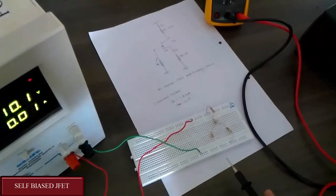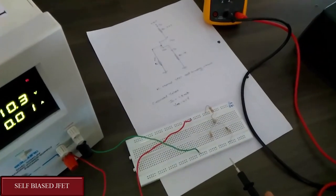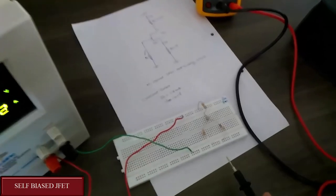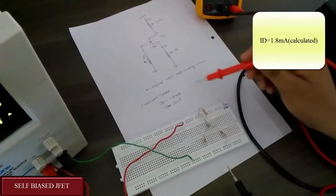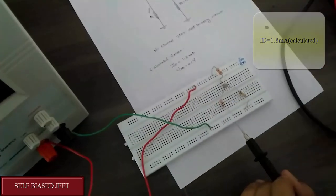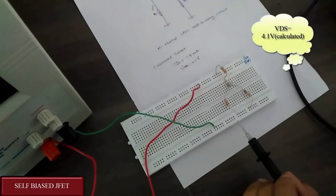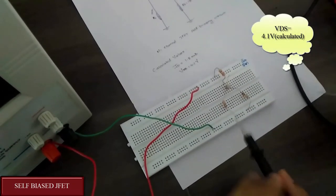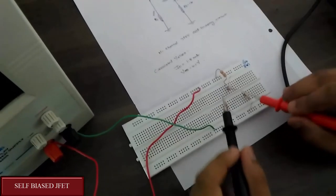As we have discussed the formula of ID and VDS, we get the calculated value of ID which is 1.8mA and the value of VDS is 4.1V. Now we will observe the value on the multimeter.